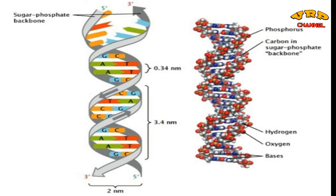This exact base pairing helps to know the sequence of one strand by knowing the other. A complete turn of the helix in DNA is about 34 angstrom or 3.4 nanometer long, containing approximately 10 base pairs. That means two adjacent base pairs of a helix are 3.4 angstrom or 0.3 nanometer apart from each other. On the right side you can see the model of DNA with all its constituent atoms along with the red colored sugar-phosphate backbone.